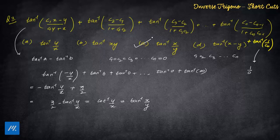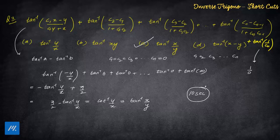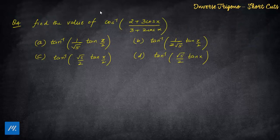Since answers are not in terms of cot inverse, we convert: cot inverse(y/x) = tan inverse(x/y). Question over. This again reduces to a 10-second problem. That is what method of substitution teaches you — if you understand the concept, nothing is tough.